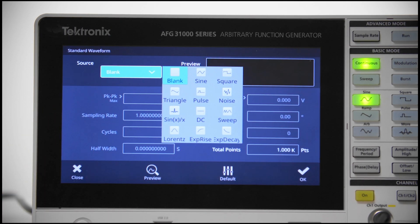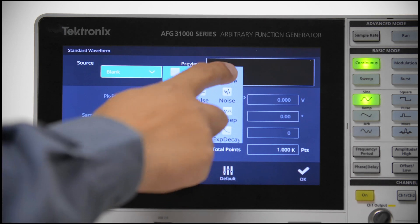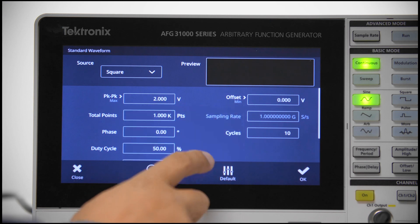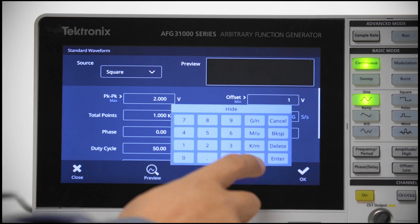Click Source to bring up multiple wave options. I'll choose a square wave and then set parameters for voltage, number of points, cycles, and offset.